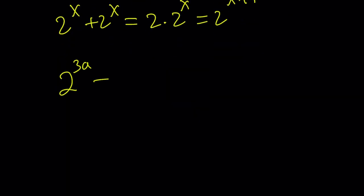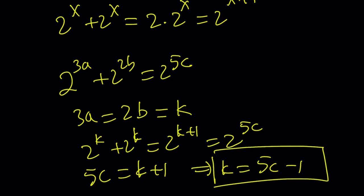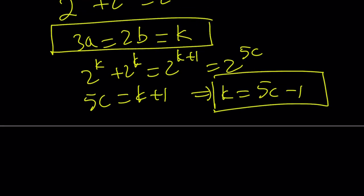Okay, let's rewrite the equation. So this means 3a equals 2b. You know the joke, I'm not going to say it because some people get upset about it. Anyways, so from here, we get the following. Let's go ahead and set both of these equal to k. Then we get the following, 2 to the k plus 2 to the k equals 2 to the k plus 1, and that is equal to 2 to the power 5c. So from here, 5c becomes k plus 1, or k becomes 5c minus 1. So 3a equals 2b equals 5c minus 1.